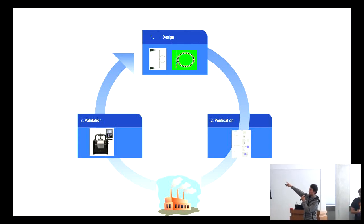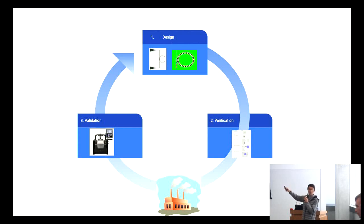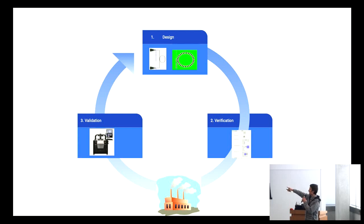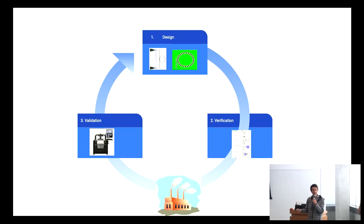The idea is that you start with your design — you describe your design in Python or YAML. You can simulate it, optimize it. It's Python-friendly, so it's very easy to use with all the machine learning tools and all the cloud-based tools. Then you can verify it, make sure it works, and generate the layouts. Finally, you can validate it. Once you do your design, you can put labels for automatic testing, so by the time your chip comes back, you already know how to test it.